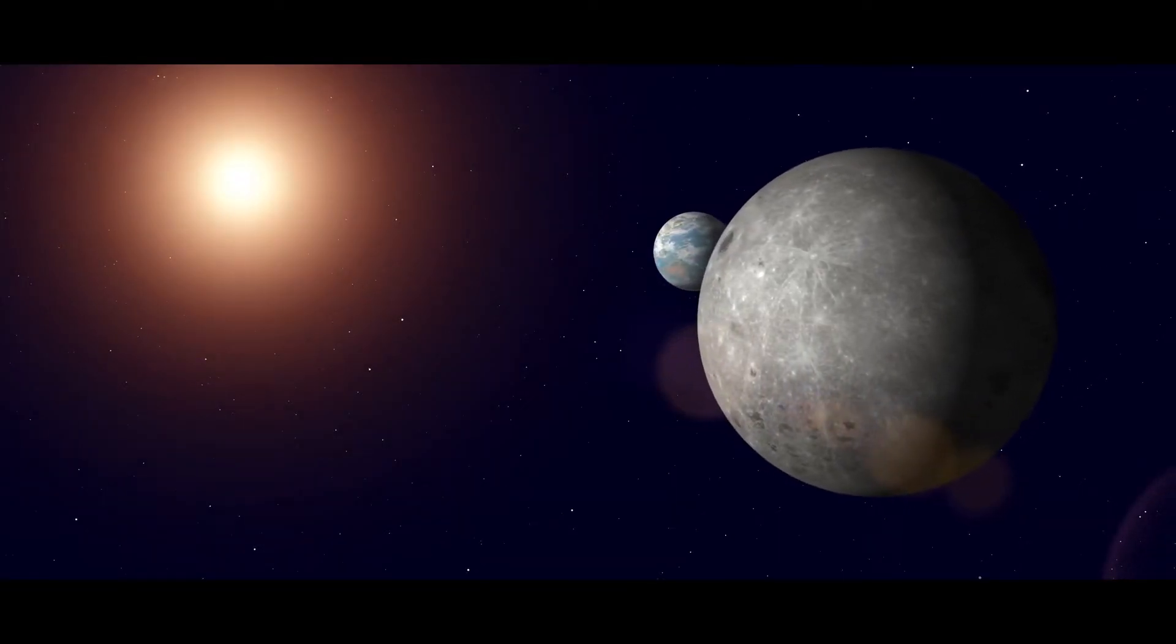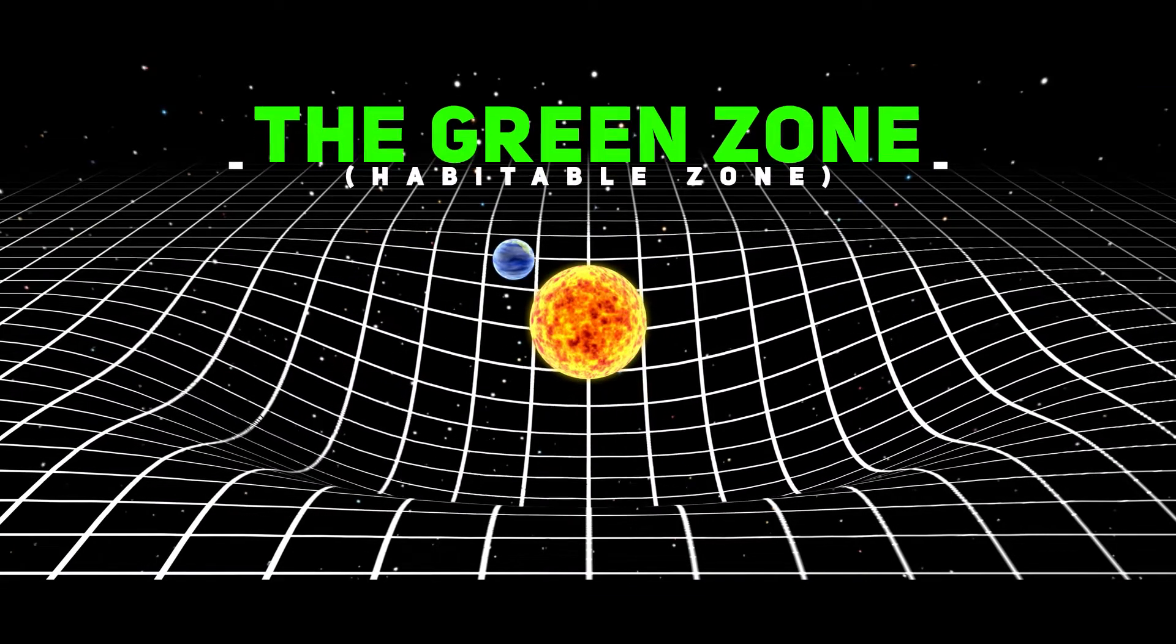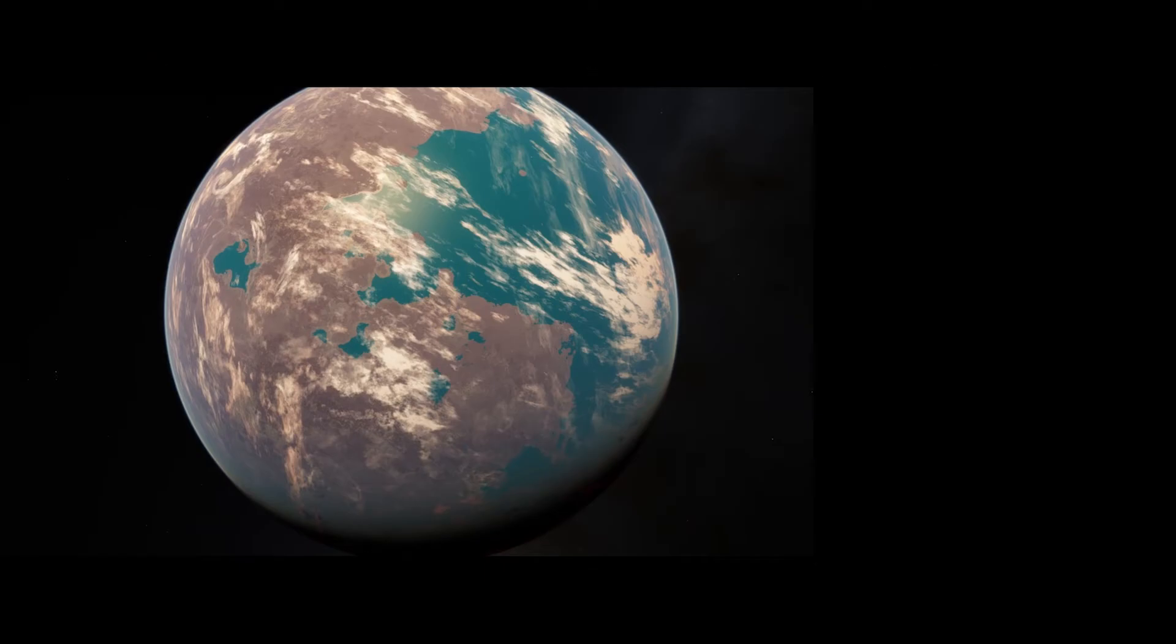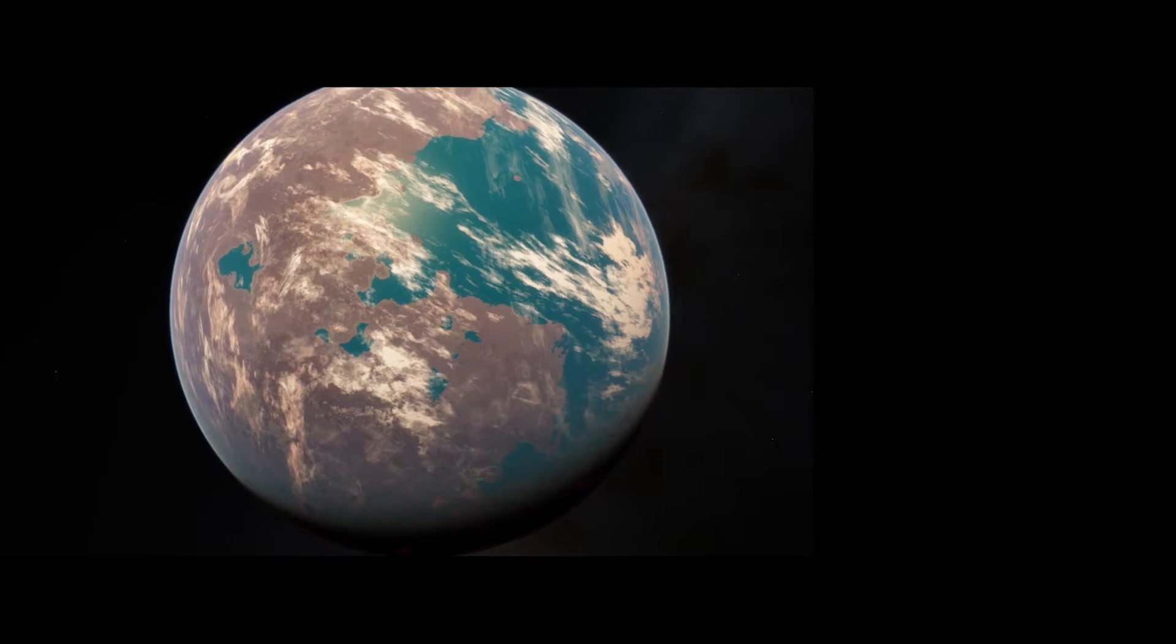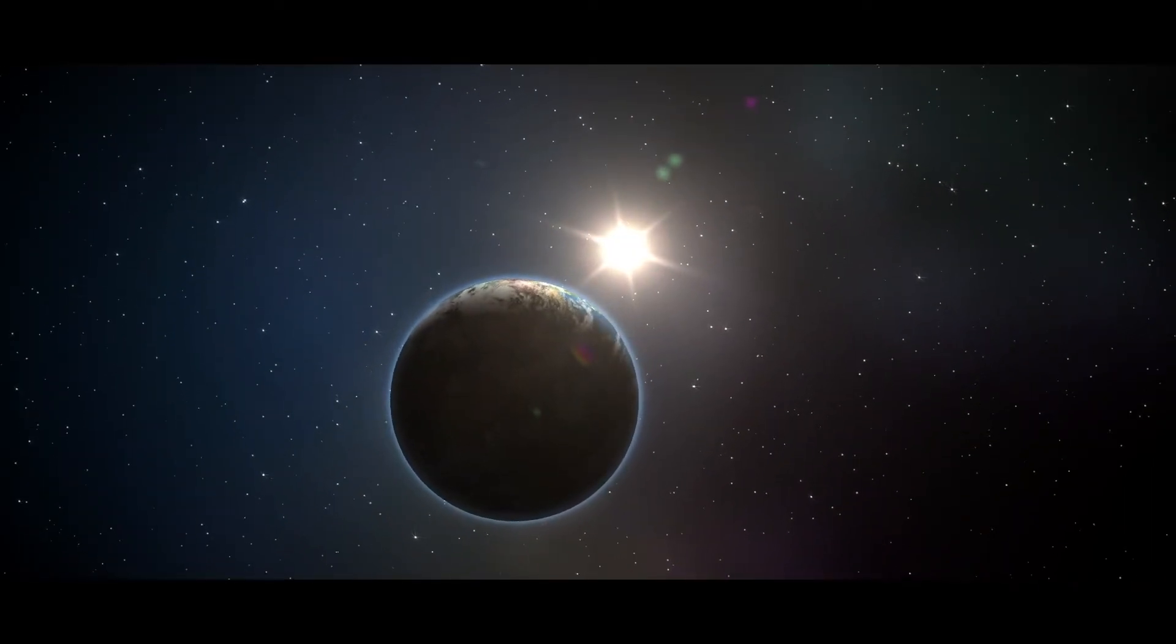The planet's 267-day orbit puts it evenly within the habitable zone. Kepler-62 orbits closer to its red dwarf sun than Earth does to its star, but the star produces much less light.